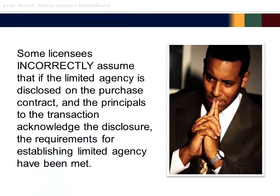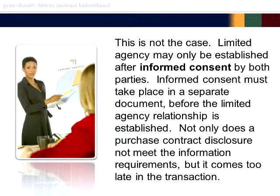Some licensees incorrectly assume that if the limited agency is disclosed in the purchase contract, the principals to the transaction acknowledge the disclosure and the requirements for establishing limited agency have been met. This is not the case. Limited agency may only be established after informed consent by both parties. Informed consent must take place in a separate document before the limited agency relationship is established. Not only does a purchase contract disclosure not meet the information requirements, but it comes too late in the transaction.